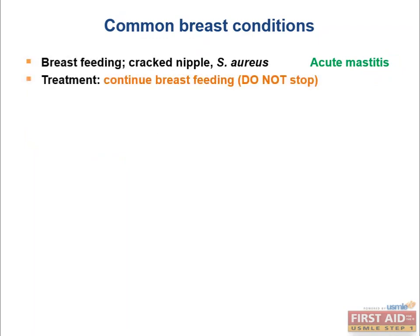Acute mastitis typically shows up in a breastfeeding woman who has a cracked nipple with soreness. It's typically Staph aureus — gram-positive coccus, catalase and coagulase positive. A classic USMLE question asks the treatment: most students select temporarily discontinue breastfeeding, but that's wrong. You continue breastfeeding from the affected breast — it helps clear out the infection and doesn't harm the baby.